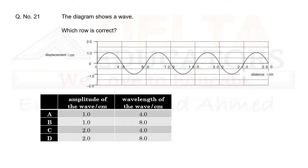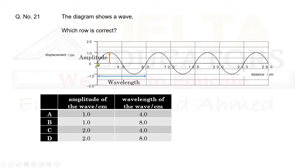Question 21: A diagram shows a wave. Which row gives the correct amplitude and wavelength? Amplitude is the vertical distance from the mean position to the peak, which is 1. Wavelength is the distance between two consecutive crests — from point 0 to point 8, giving a wavelength of 8. Amplitude = 1 and wavelength = 8 is given in option B. Correct option is B.